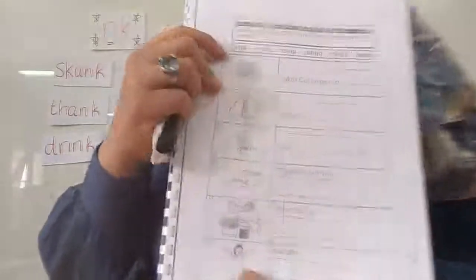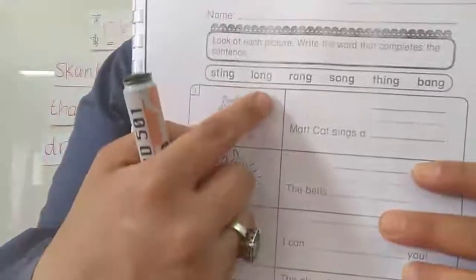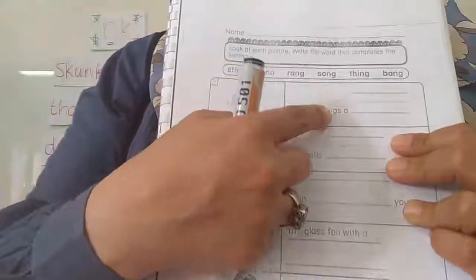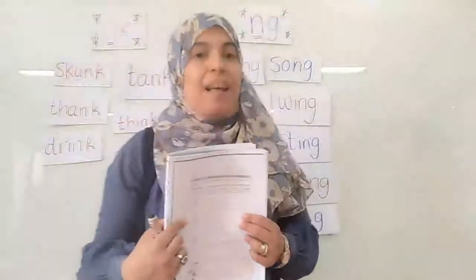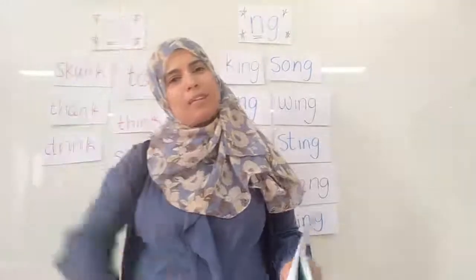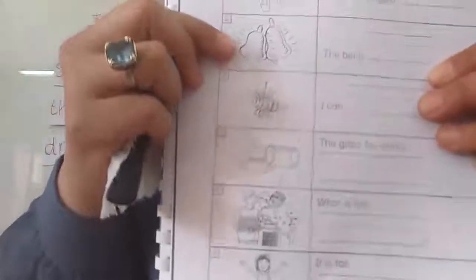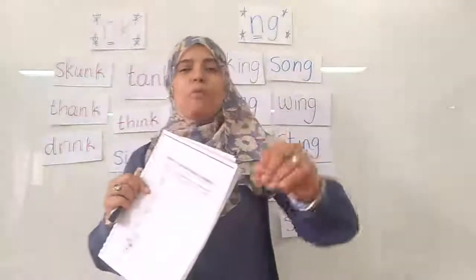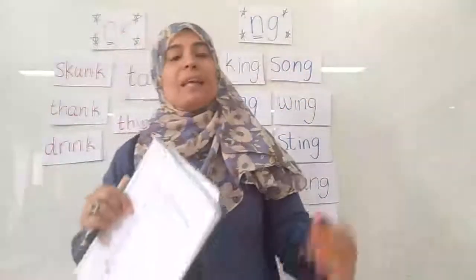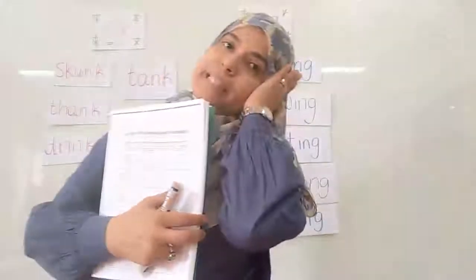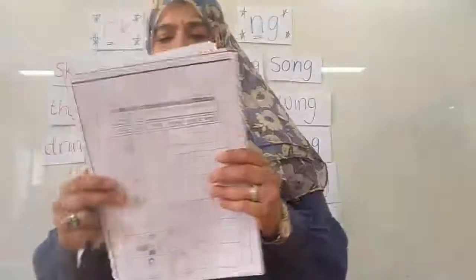Page 29 — let's read the words together: sting, long, rang, song, thing, bang. This cat is telling me — mat, cat, sings. She will sing a song. Circle the word song and write it. Number two: the bells. When the session is finished, the bells rang. Rang is the past tense of ring. Now my mobile rings; yesterday when I was sleeping, my mobile rang and I didn't hear it.